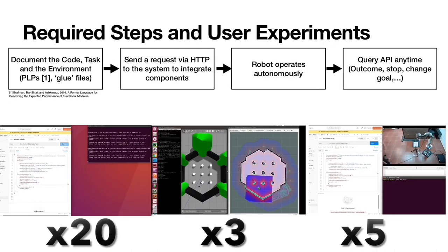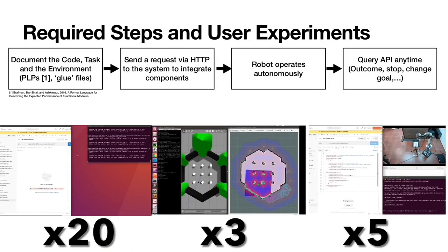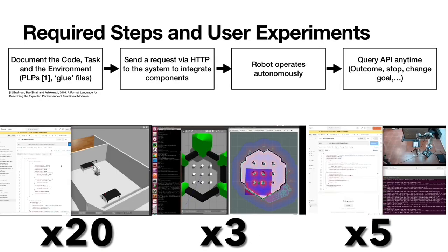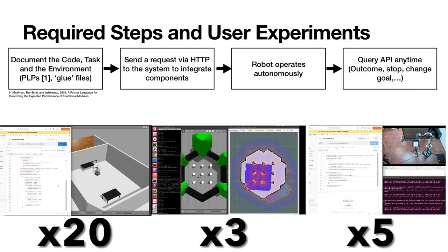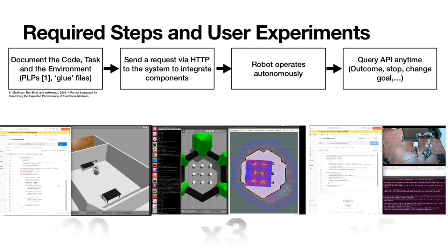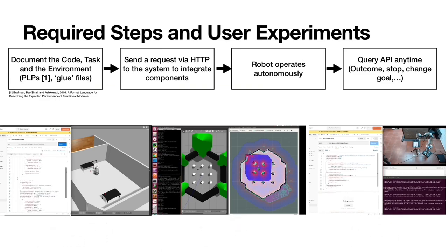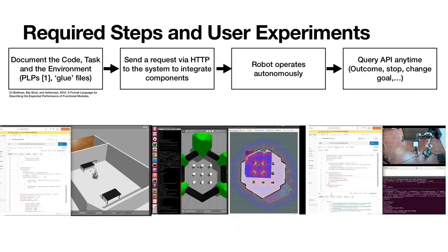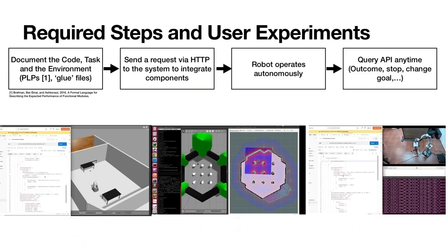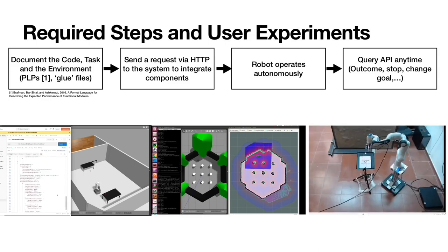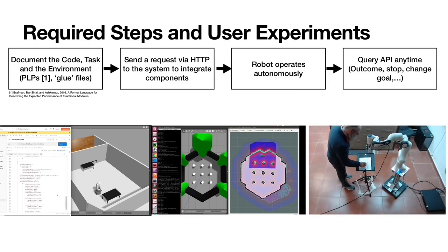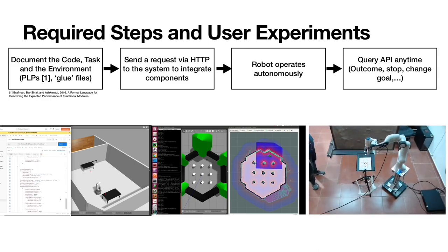The required steps by the user are simple. First, document code, tasks, and environment in performance level profiles and clue files. Then send a request via HTTP to the system to integrate those components. Without further effort, the robot will start to operate autonomously and can be queried via API any time.